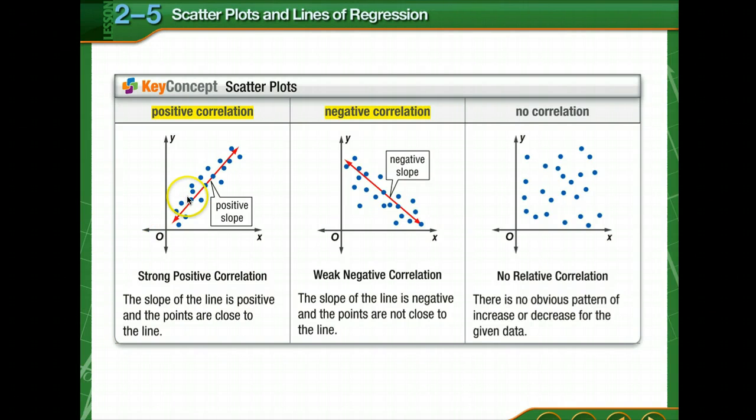Let's look at positive and negative correlation. See, it looks like a positive and negative slope, doesn't it? So a positive slope has a positive correlation. A negative slope shows a negative correlation.